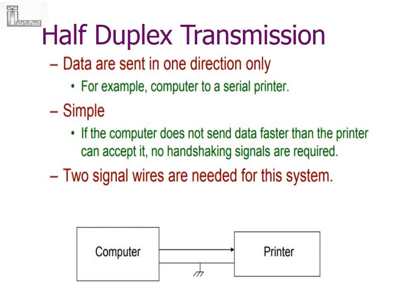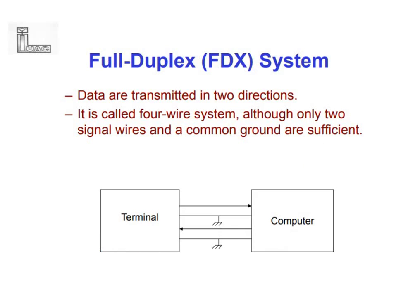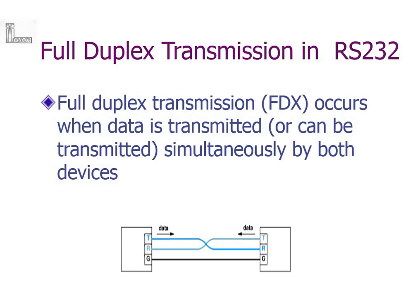What is half-duplex transmission? Data is sent in one direction only — it's like a walkie-talkie where only one person speaks at a time, so only one wire is required. When it comes to full duplex, data flows back and forth. RS-232 is a full-duplex transmission, and you can see how the transmit and receive wires are connected to accommodate that.